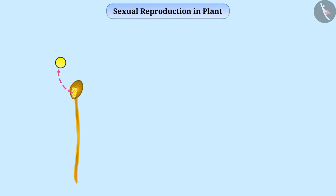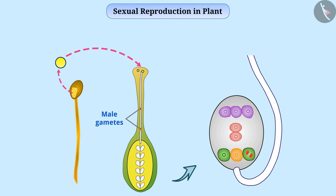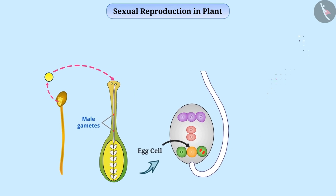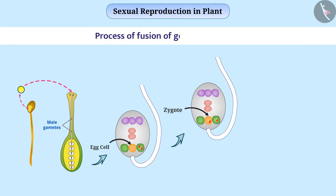When pollen grains land on the stigma of a flower, a tube develops from the pollen grain which passes through the style and reaches the embryo sac of an ovule. Two male gametes enter the embryo sac from the pollen grain. The ovule consists of an embryo sac that is oval shaped with eight cells, one of which is the egg cell or female gamete. A male gamete fuses with the female gamete to produce a zygote. The process of fusion of germ cells to form a zygote is called fertilization.